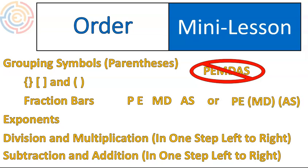The way that I write it, I put parentheses around that multiplication/division and addition/subtraction to try and help you realize that that is one step each. So parentheses or grouping symbols is one step. Exponents is one step. Multiplication/division is one step. Addition/subtraction is one step.